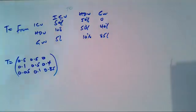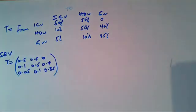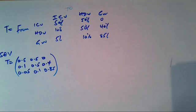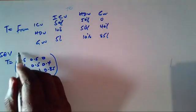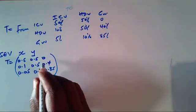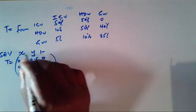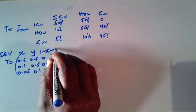For us to get the equilibrium vector, I want to define our steady-state row vector — let's call it 'save'. Remember, we define it on the basis of the columns of the transition matrix. Column 1 takes unknown X, column 2 takes Y, and the third column, being the balancing figure, will be 1 minus X minus Y.